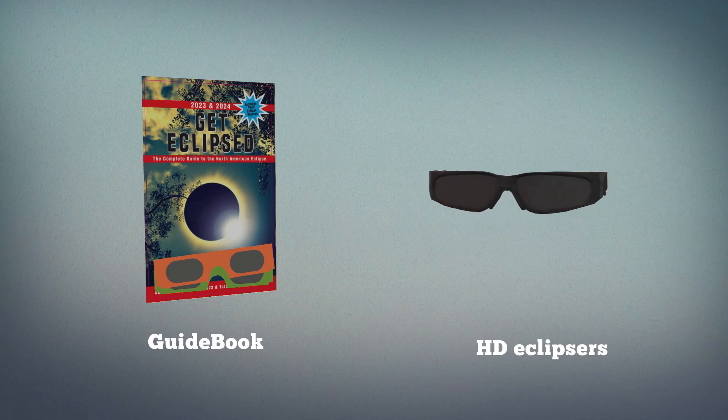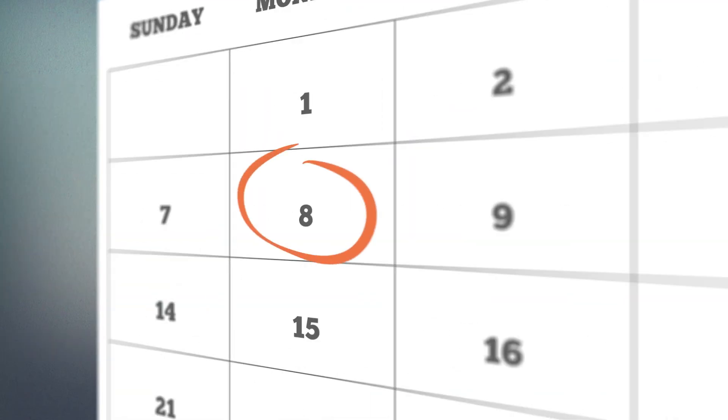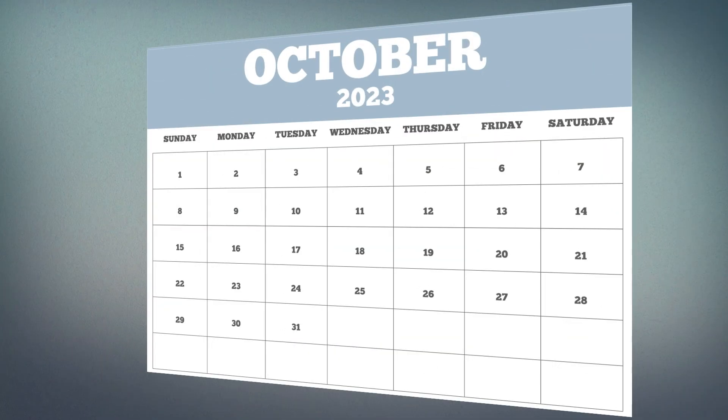Not only will 2024 be the biggest eclipse of our lifetime, there will also be a highly anticipated annular solar eclipse occurring just months before on October 14, 2023.